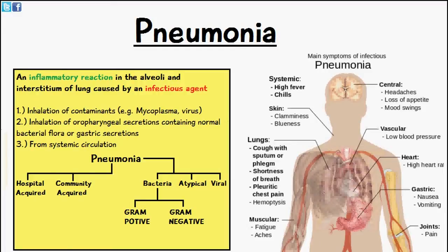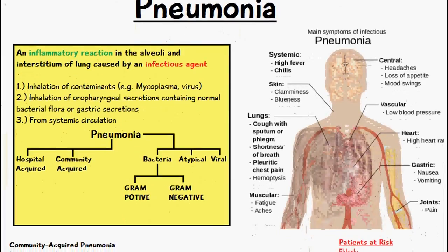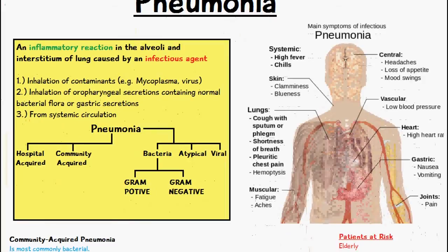Some of the causes of pneumonia can be through the inhalation of certain contaminants which contain mycoplasma or viruses, through the inhalation of oropharyngeal secretions which contain normal bacterial flora or gastric secretions or both, or it can be from the systemic circulation.